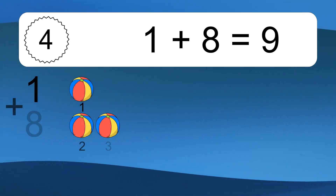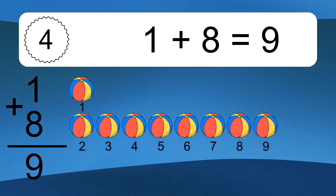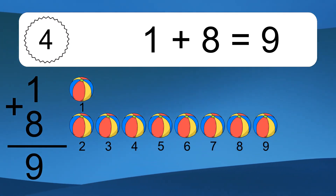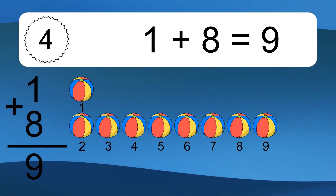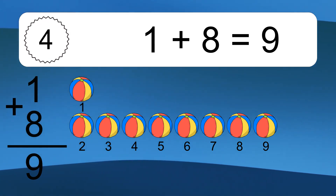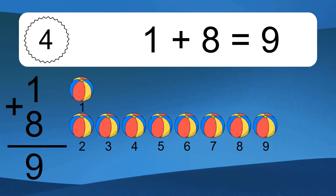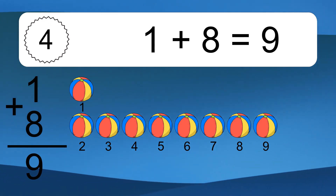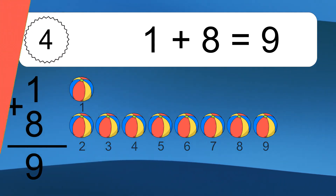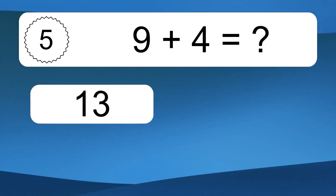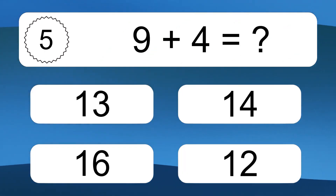1 plus 8 equals what? 1 plus 8 equals 9. Let's count it. 1, 2, 3, 4, 5, 6, 7, 8, 9.